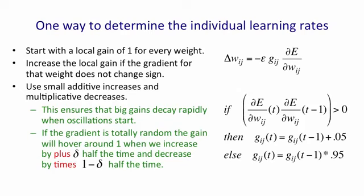If the gain is bigger than 1, the multiplying by 0.95 will reduce it by more than adding 0.05. If the gain is smaller than 1, adding 0.05 will increase it more than multiplying by 0.95 decreases it. So with random gradients, we'll hover around 1. And if the gradient is consistently in the same direction, we can get much bigger than 1. If the gradient is consistently in opposite directions, which means we're oscillating across a ravine, we can get much smaller than 1.